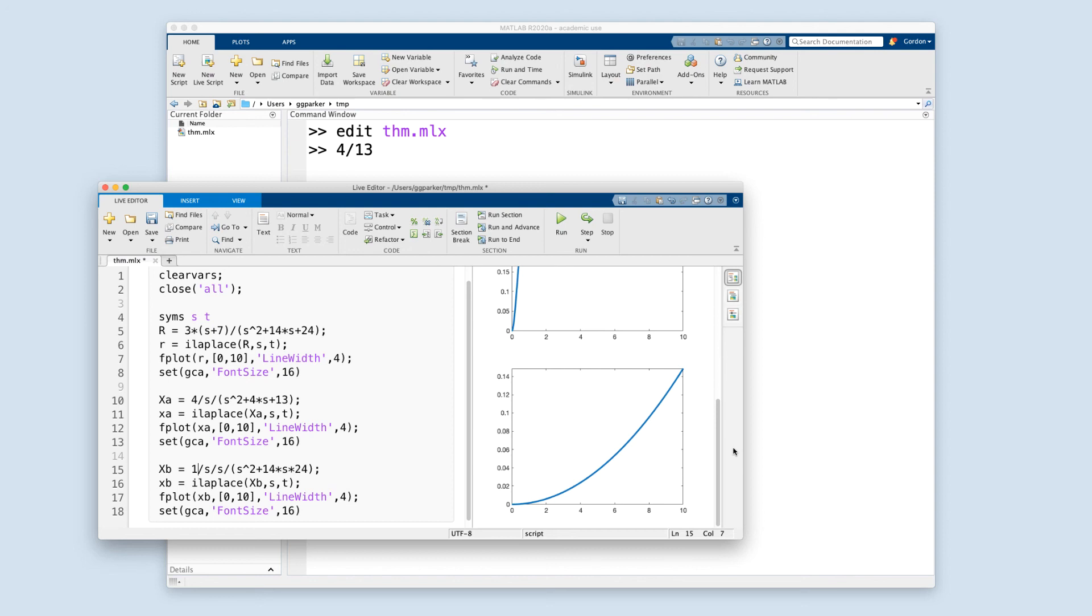So, that's it. The initial value theorem and the final value theorem. The main thing that you want to keep track of is that applicability of the final value theorem. You have to form s times F(s) and check its denominator. And all of its roots have to have negative real parts. After that, you're good to go. So, I hope this helps. Thanks for watching. Bye-bye.